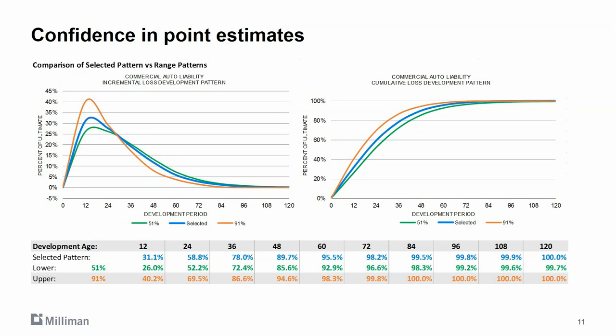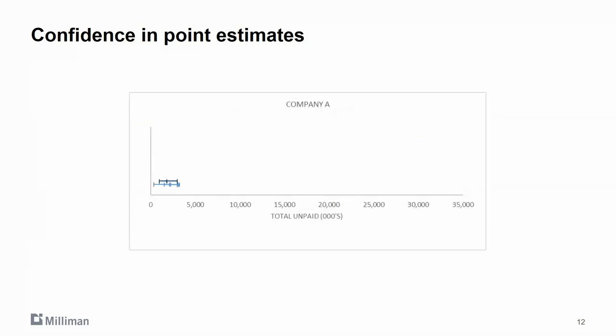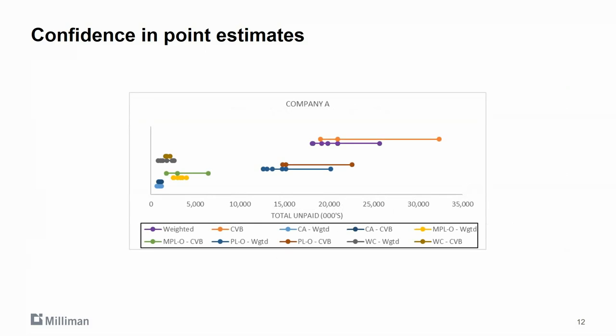Once you fit a benchmark pattern to your data, it is easy to create a statistically-based range of patterns. For example, you can select patterns plus or minus 20 percentage points from the selected pattern. This benchmark range can easily be compared to your range of reasonable estimates for multiple methods, and you can build ranges from all of the segments into a range for the entire company. This dynamic approach can help you gain more confidence in your range of reasonable estimates.